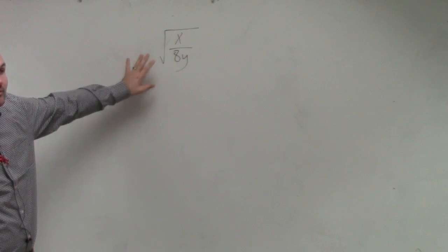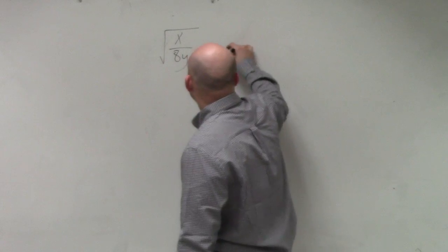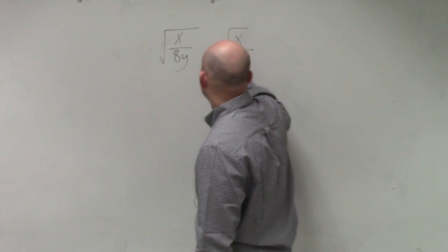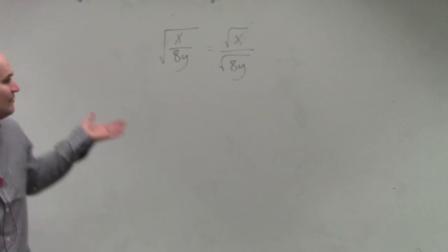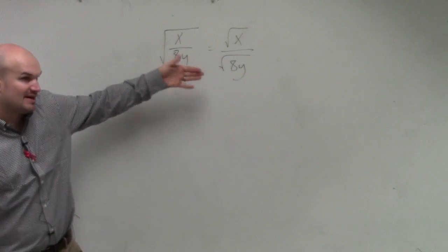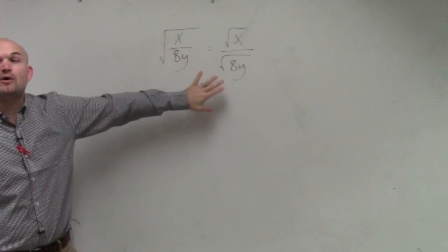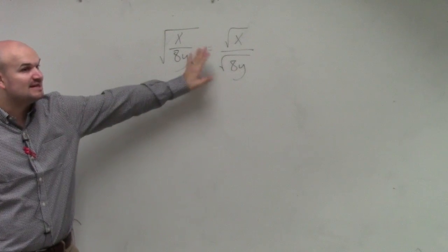So therefore, another thing we can do is we can break this up into the square root of x over the square root of 8y. Now, the next thing we can do is, rather than if we can't simplify it by dividing our denominator into our numerator, we can always eliminate the radical from the denominator.